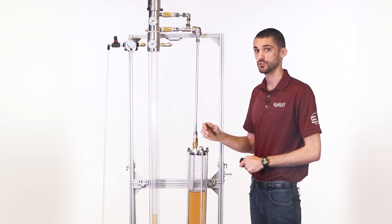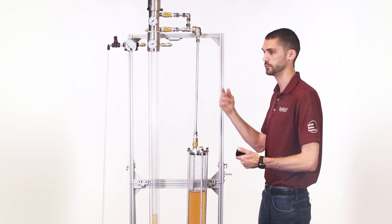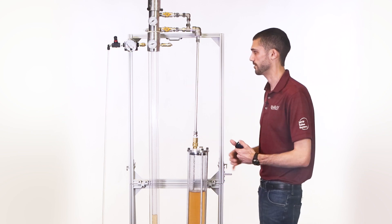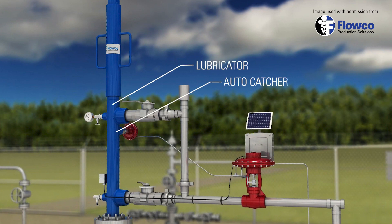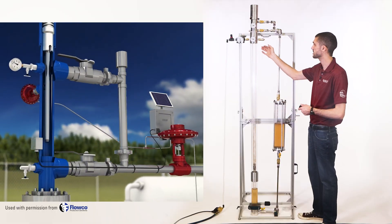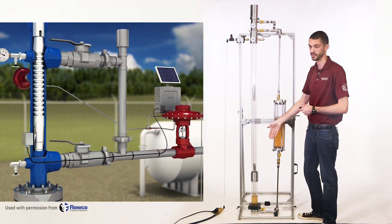If a producer ever wants to change the type of plunger that they're using, if fluid rates have decreased or they're wanting something different out of the plunger lift system, there will be an auto-catcher on the lubricator. And so when the plunger comes to surface, it will catch the plunger and not allow it to fall back down hole.